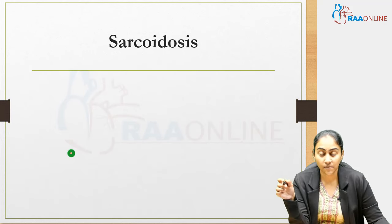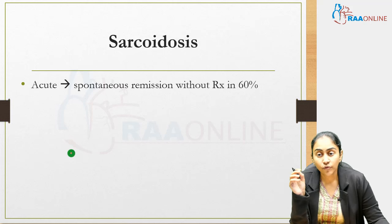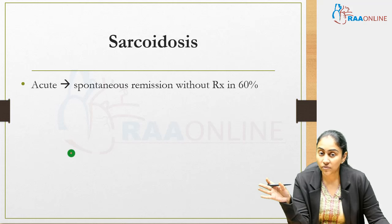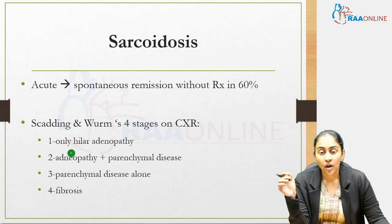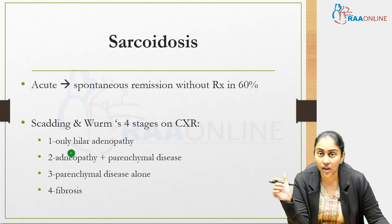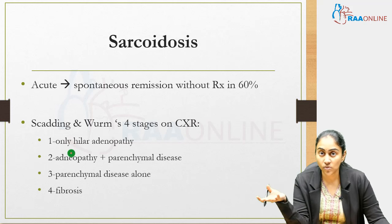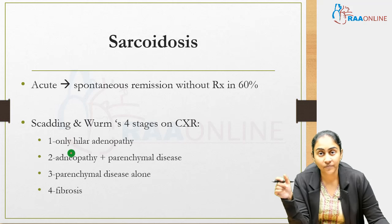Sarcoidosis is important to understand for MRCP questions. In 60% of acute sarcoidosis cases there is spontaneous remission. The Scadding-Worms chest X-ray stages: Stage 1 — hilar lymphadenopathy only; Stage 2 — adenopathy plus parenchymal disease; Stage 3 — parenchymal disease only; Stage 4 — fibrosis. So: hilar adenopathy only is Stage 1, parenchymal only is Stage 3, both present is Stage 2, and fibrosis is Stage 4.